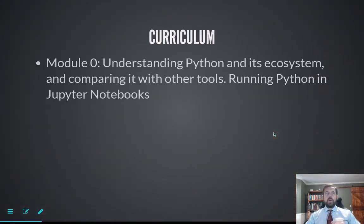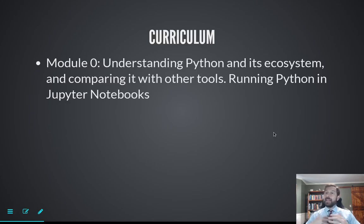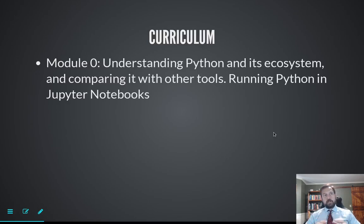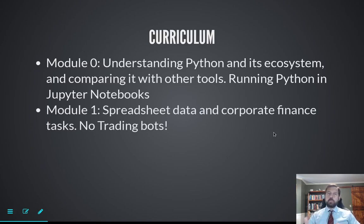In module zero of the course we're going to start interacting with Python. We'll learn how to interact with Python in Colab notebooks, define simple functions, and a really big thing we'll do is look at how to use packages that other people have created. That's a theme throughout this course — there's a lot out there already written that we can use to optimize portfolios, calculate things, and slice and dice data frames. The last session in module zero will look at how to find what other people have done and how to import it.